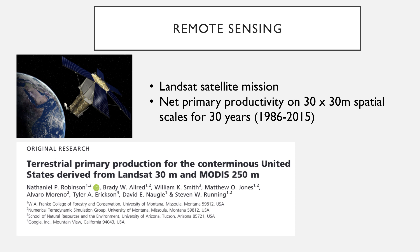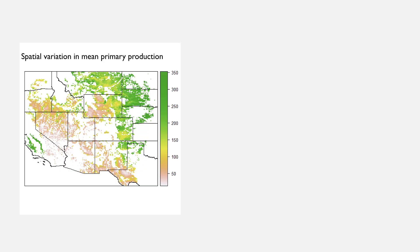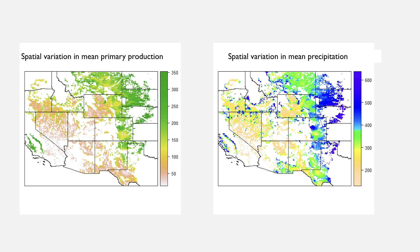To answer this question, we can turn to the tools of remote sensing. For this talk in particular, I'm using data from the Landsat satellite mission from 1986 to 2015, specifically a recently updated product from Nate Robinson and colleagues, where they optimized the gross primary productivity component of the model used to generate net primary productivity data for the continental United States. As a first step, this allows us to understand spatial variability in net primary productivity. This map represents mean spatial variability in net primary productivity across different dryland regions, linked with modeled estimates of mean annual precipitation.